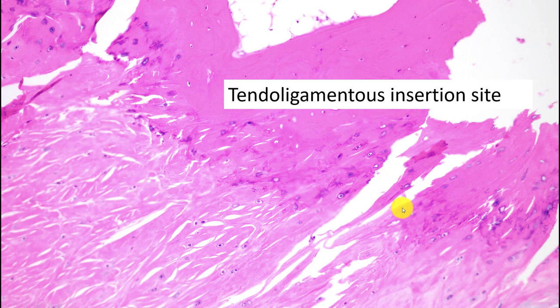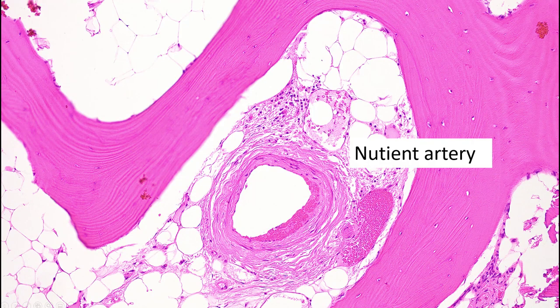If you look at the tendon-ligamentous insertion site under the microscope, you'll see a very peculiar fibrocartilaginous area with lacuna spaces and cells that look like chondrocytes. Bone requires nutrition delivered through the nutrient artery, which is accompanied by a vein and nerves. The nutrient artery penetrates the cortex and distributes in the cancellous bone, going up to the metaphysis, with vascular channels crossing the metaphyseal-epiphyseal junction to supply the epiphysis.